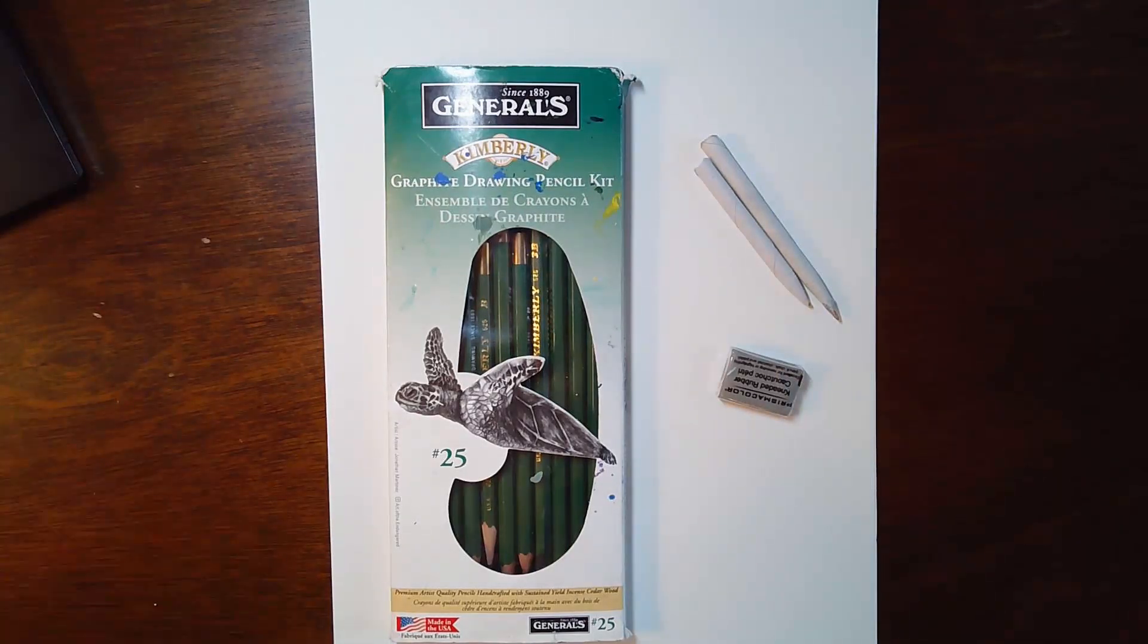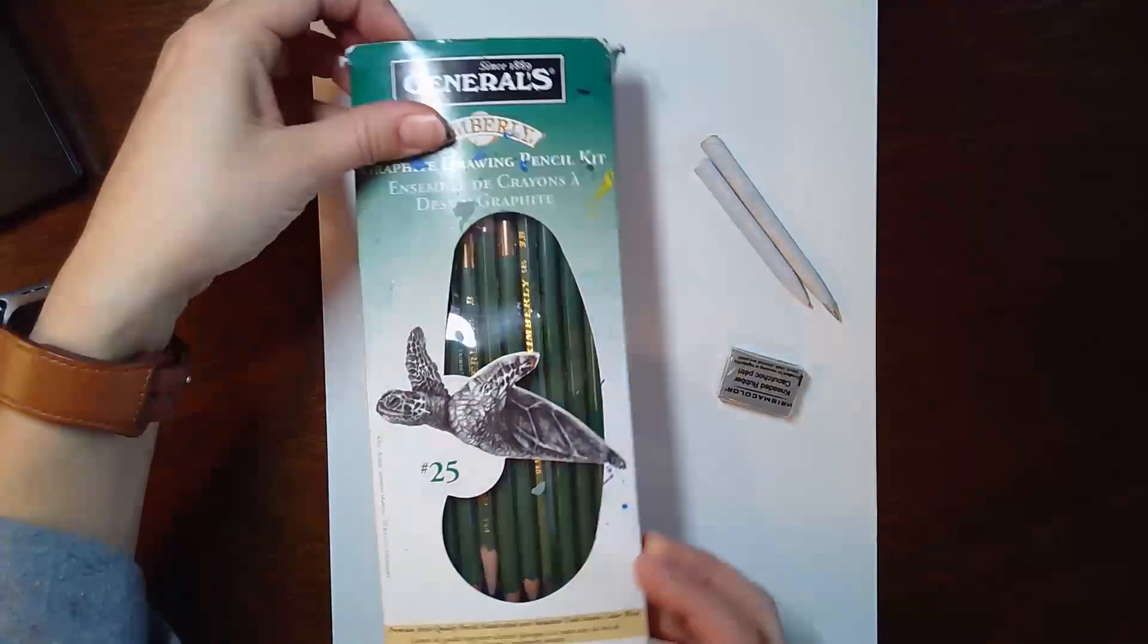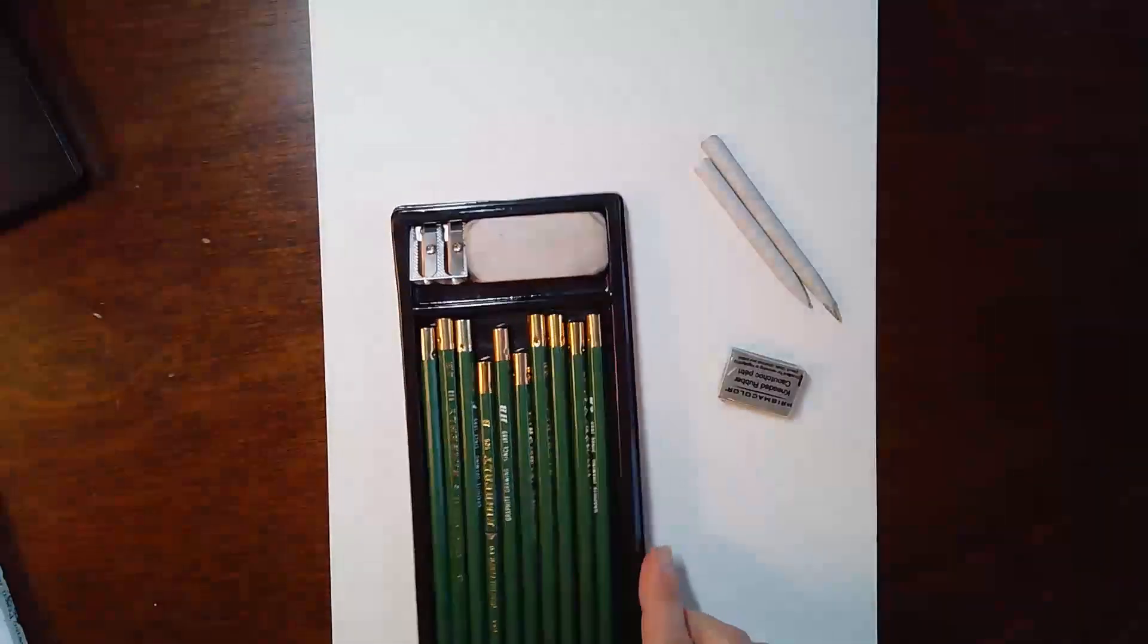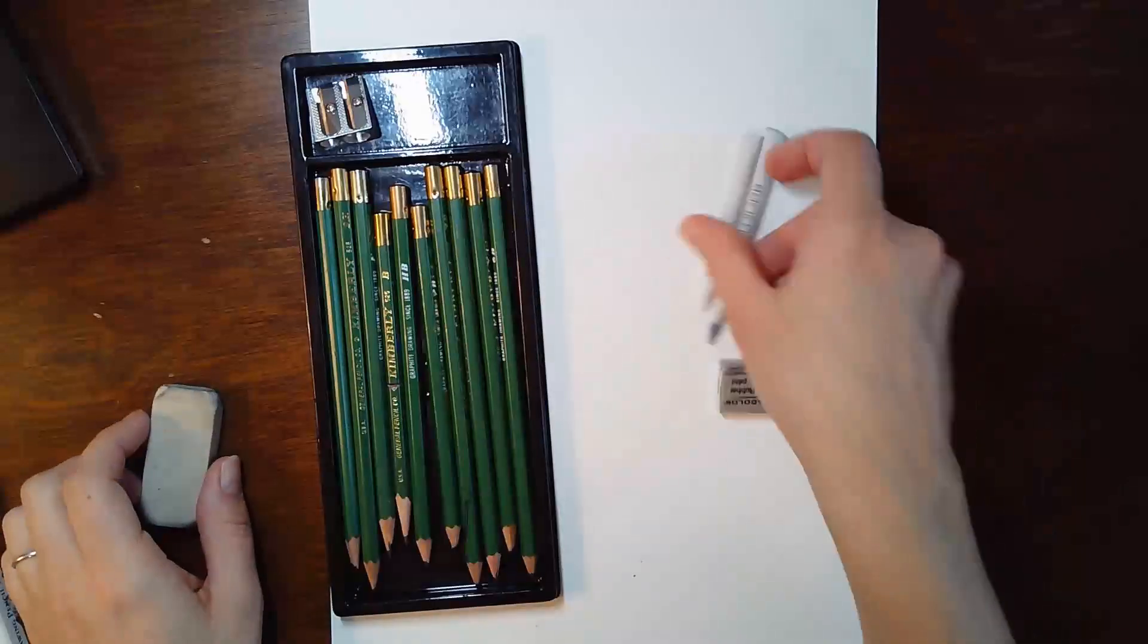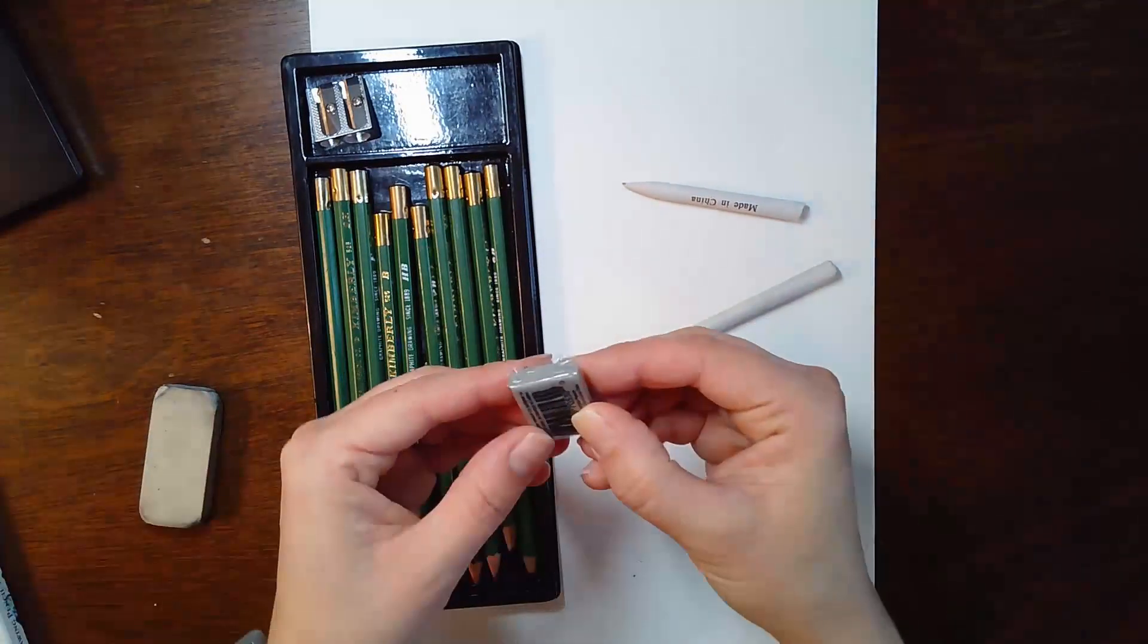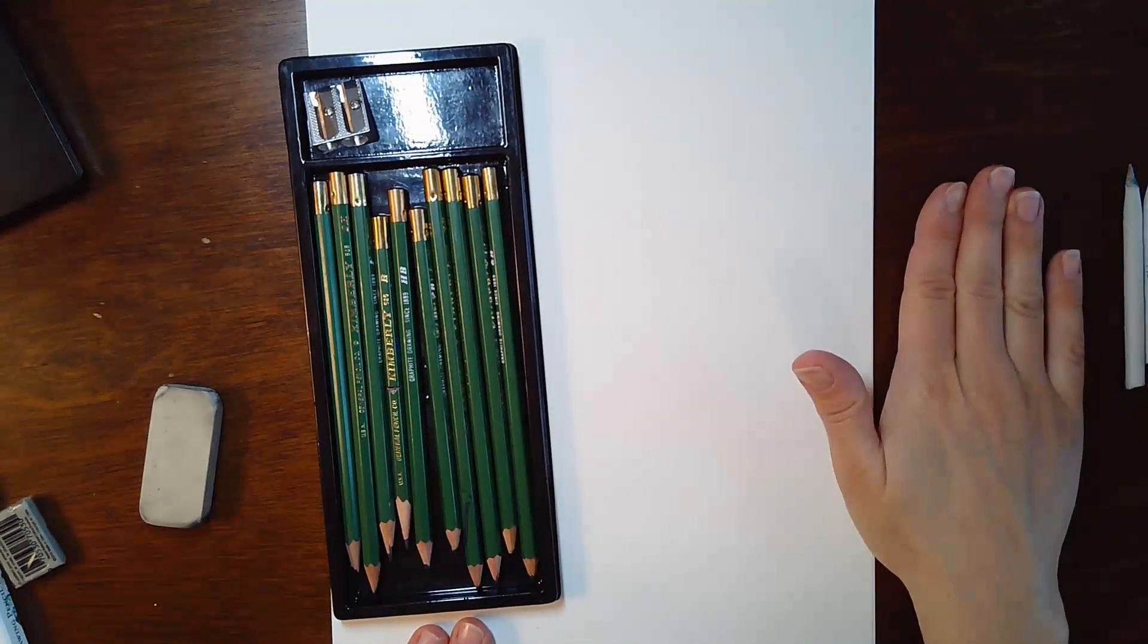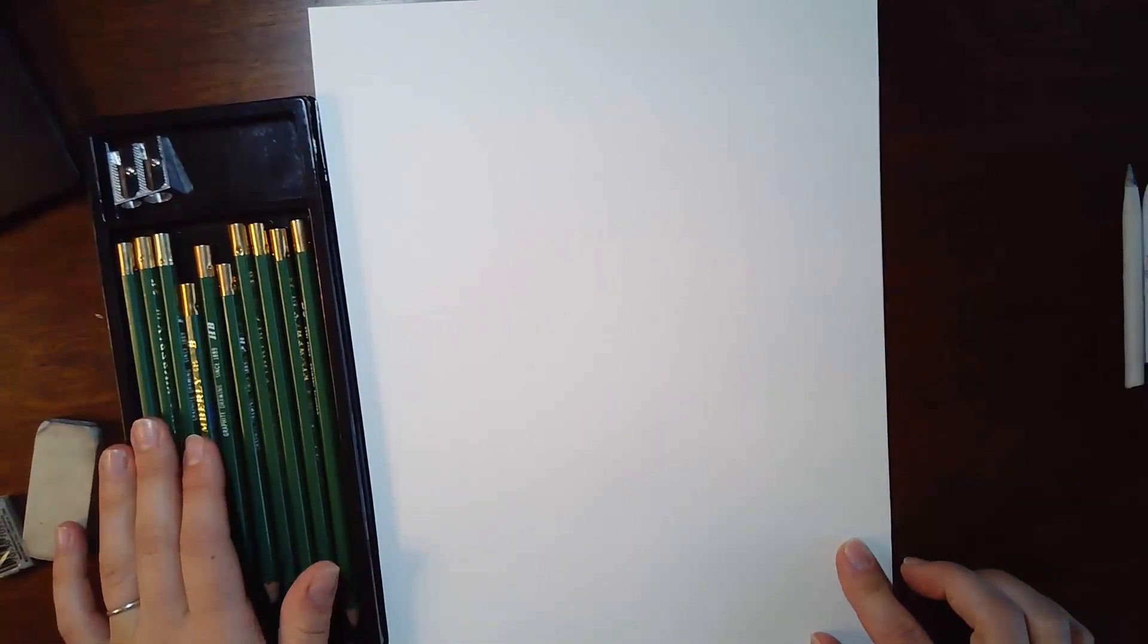To begin drawing portrait proportions, you'll need your pencil set with your main eraser, sharpener, and your blending stick, and a kneaded eraser. You'll also want to have your portrait out, and this is going to show you the main structure of drawing a portrait.